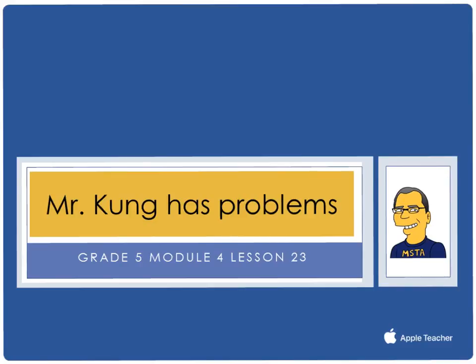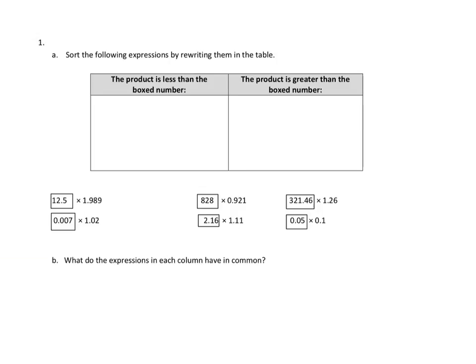Hello, and welcome to another episode of Mr. Kung Has Problems. Tonight, in Grade 5, we are working on Module 4 and Lesson 23. And tonight in Lesson 23, we are comparing the size of the product to the size of the factors. So very much similar work to what we've been doing over the last couple of nights, especially last night. Let's take a look at some of the problems for tonight's homework and see what we can do.